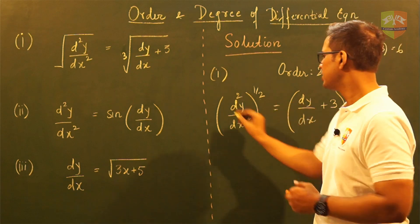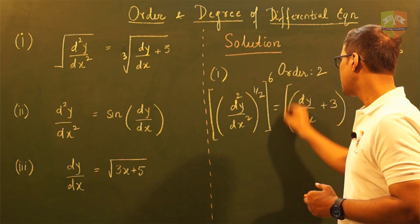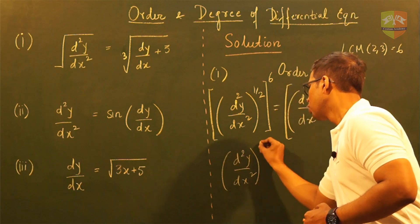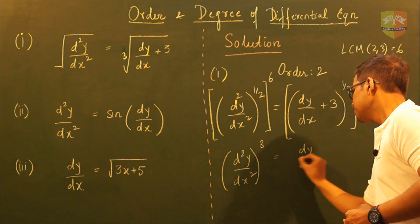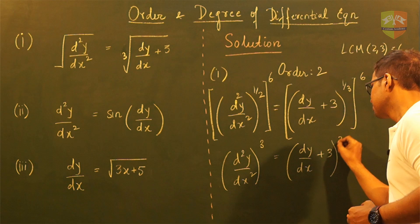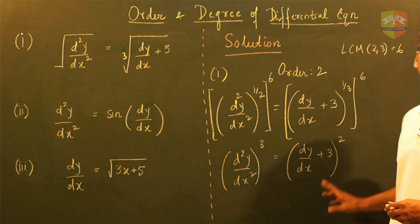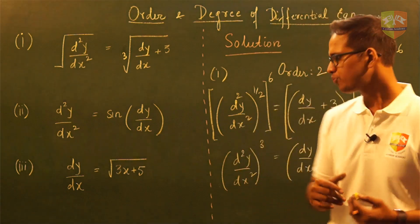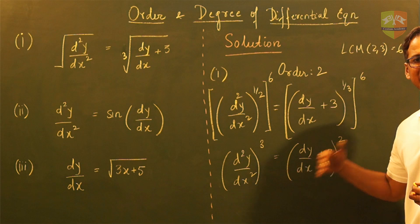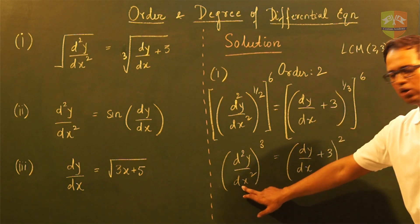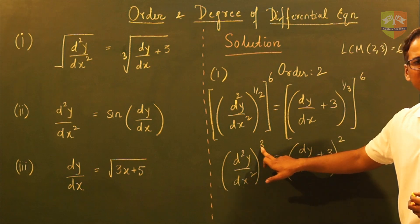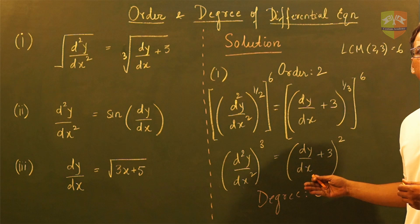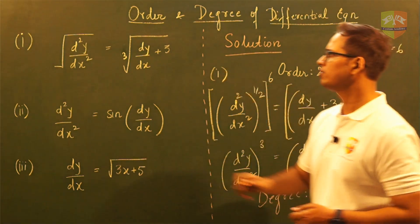In order to convert to polynomial form, I need to make these two numbers whole number powers. For that we multiply both sides to the power of the LCM of 2 and 3, which is 6. When I raise both sides to the power of 6, the left side becomes d²y by dx² whole to the power of 3, equal to (dy by dx + 3) whole to the power of 2. Now each differential coefficient is subjected to a whole number power. The exponent of the highest differential coefficient d²y by dx² is 3, so the degree is 3. This is an order 2, degree 3 differential equation.